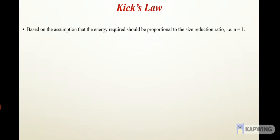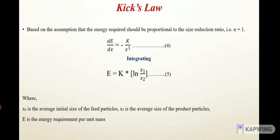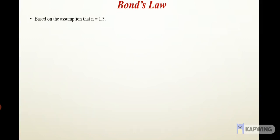Next we are going to study Kick's law. This is based on the assumption that the energy required should be proportional to the size reduction ratio, and here we consider n = 1. We will put n = 1 in equation 1, so we will get dE/dx = -k/x. Let this be equation 4. On integrating with the same range from x1 to x2, we will get E = k ln(x1/x2), where x1 is the average initial size of the feed particles, x2 is the average size of the product particles, and E is the energy requirement per unit mass. If we require coarse crushing, this law is suitable for that.